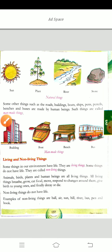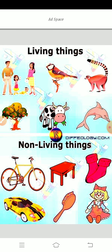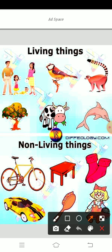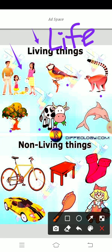Let me explain. What are the living things? Look at here, observe — many pictures are given: human beings, birds, animals, trees. These are all called the living things. Living things have life in them. They can live, they can be alive. So how do we know that they are alive?